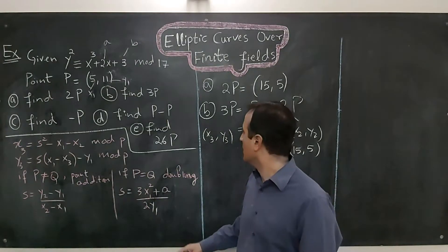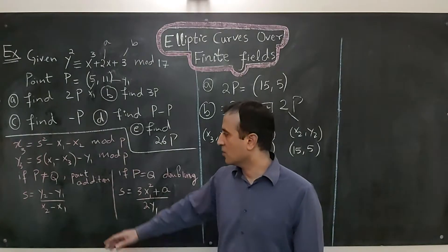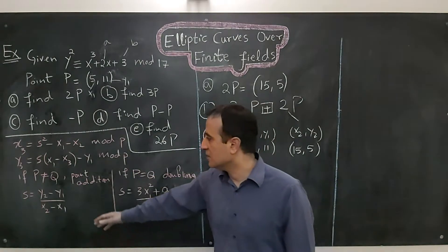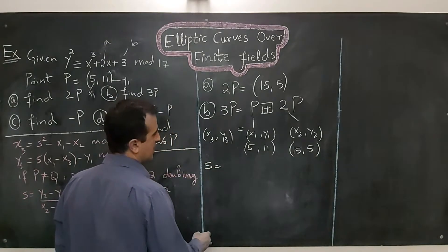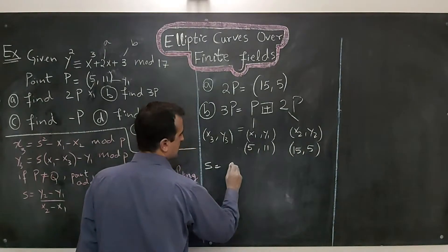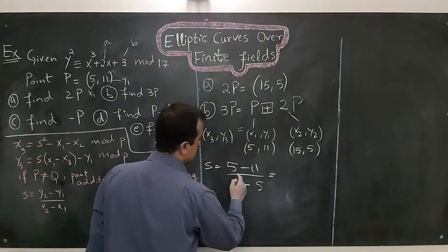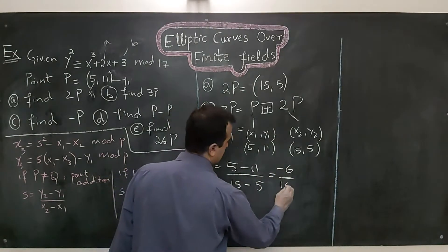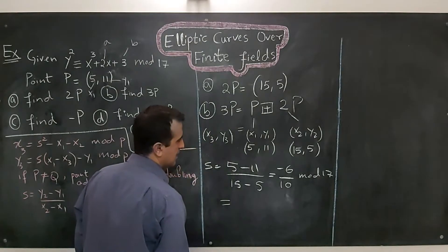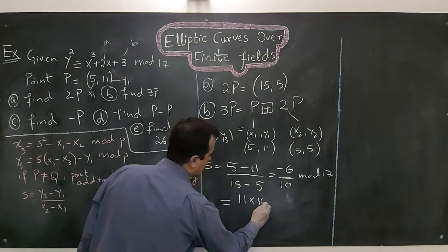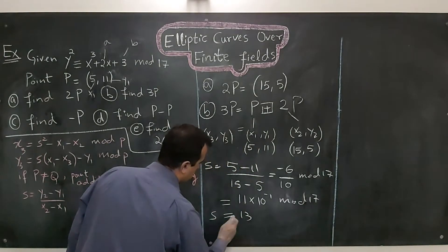In this case I can't use point doubling because we are not adding two identical points — P and 2P are two different points. So I use the chord method for point addition with the slope s = (y2 - y1) / (x2 - x1) mod 17. That is (5 - 11) / (15 - 5) = -6 / 10 mod 17. This gives -6 mod 17 = 11, times 10 inverse mod 17, and the answer is 30. So the slope is 30.